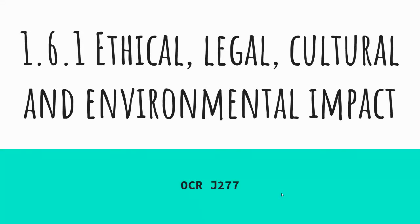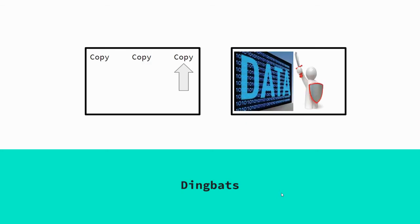Today we're going to introduce ethical, legal, cultural and environmental impacts when we're talking around computer science. This is quite a large section that we're going to break down into two parts. Quick starter activity — you've got two dingbats, so just effectively say what you see. I'll pause, give you a chance to think, and then we'll have a quick look at both.